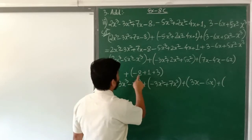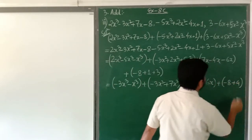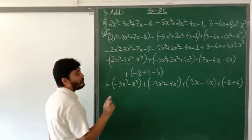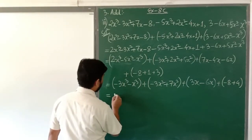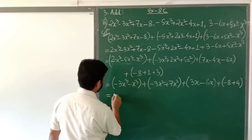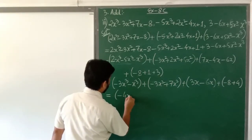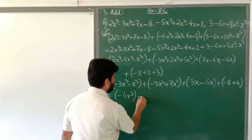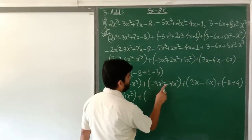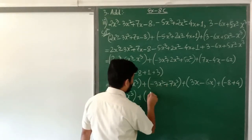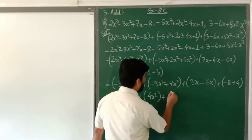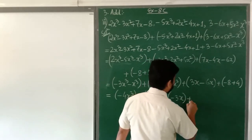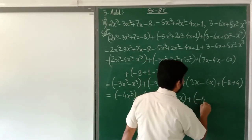Minus 8 plus 1 plus 3 gives minus 4. Now removing the bracket: minus into minus is plus, so 3 plus 1 is 4 — both are minus so minus 4x³. Then 7 minus 3 is 4 and 7 is greater and positive, so plus 4x². Then 3x minus 6x is minus 3x, and the constant is minus 4.